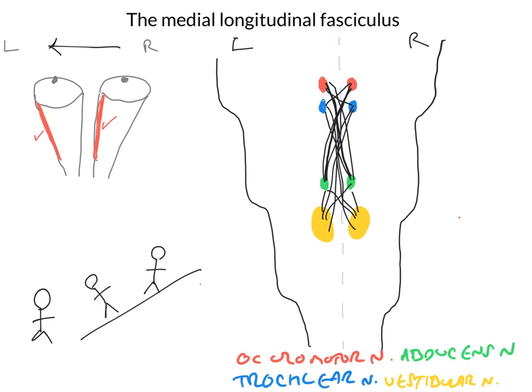Furthermore, all of these nuclei send descending connections down into the spinal cord, enabling us to generate compensatory movements of the neck or trunk in order to keep us in a neutral position. So what we've got is an exceptionally elegant system for maintaining a level horizon — really important in a bipedal species such as us, where we're constantly needing to make adjustments to our posture to keep a clear image landing on our retinas.